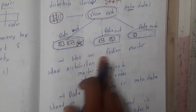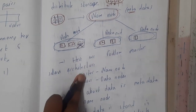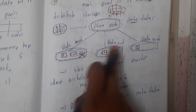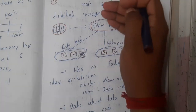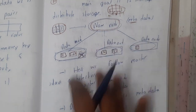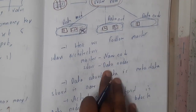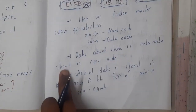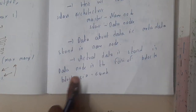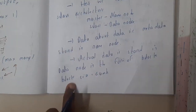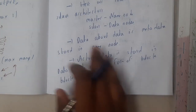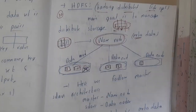HDFS follows the master-slave architecture. The master is the name node and the data nodes are the slaves. The master sends the data and the slaves receive it. Data about data — metadata — is stored in the name node, while the actual data is stored in the data nodes in the form of blocks.